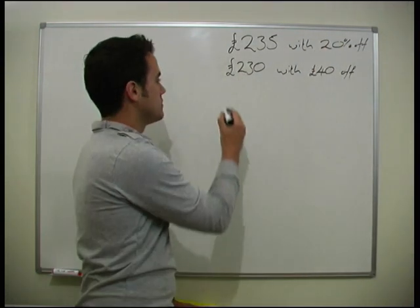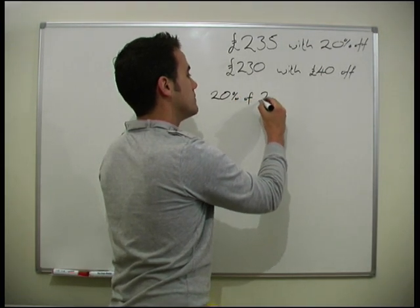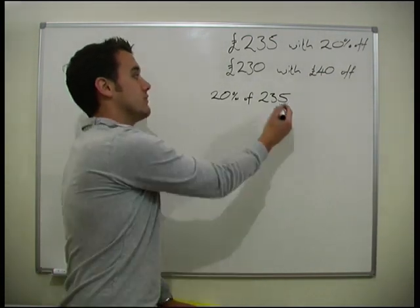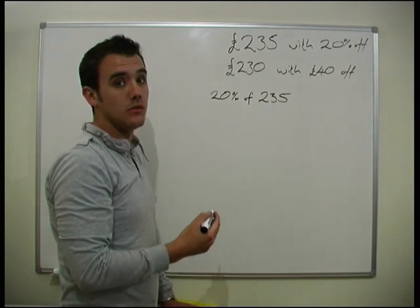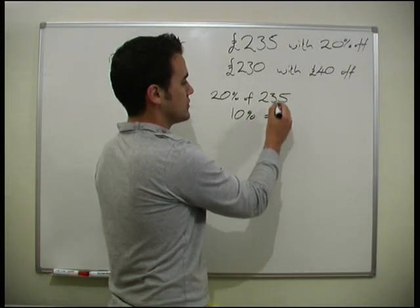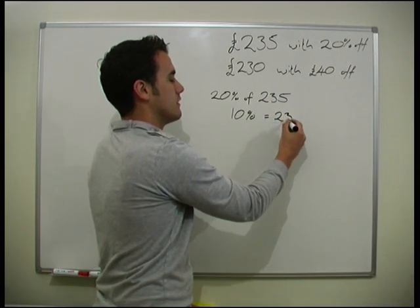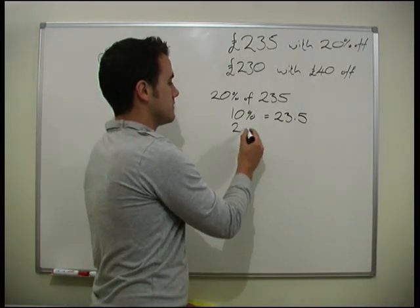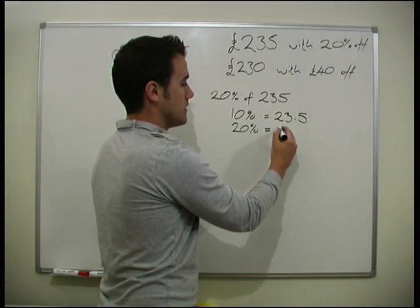Let's start with the first shop. We need to find 20% of £235. The easiest way is to find 10% first and then double it. 10% is just 235 divided by 10, which gives us £23.50. So 20% is just that times 2, which is £47.